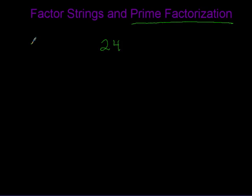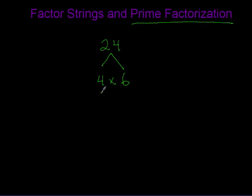We're going to make something that looks like a Christmas tree — an upside-down V. Under that we find two factors of 24; there's no right or wrong answer to start with because you'll always get to the correct answer. Let's start with four times six. Four is a composite number — two times two. Six is a composite number — two times three.